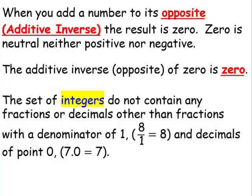The set of integers do not contain any fractions or decimals, other than fractions with a denominator of 1, such as 8 over 1, which can be simplified to 8, and decimals of 0. 7.0 can be written as just 7.